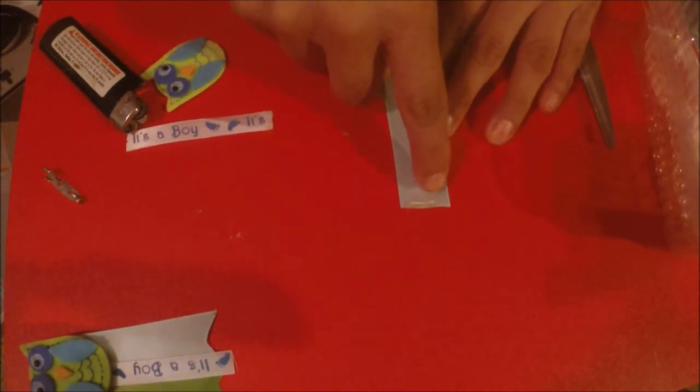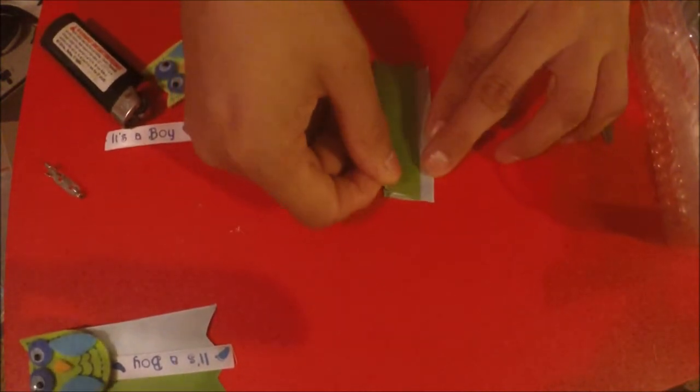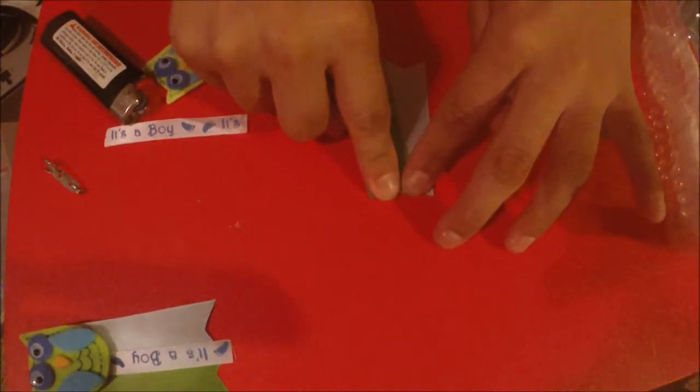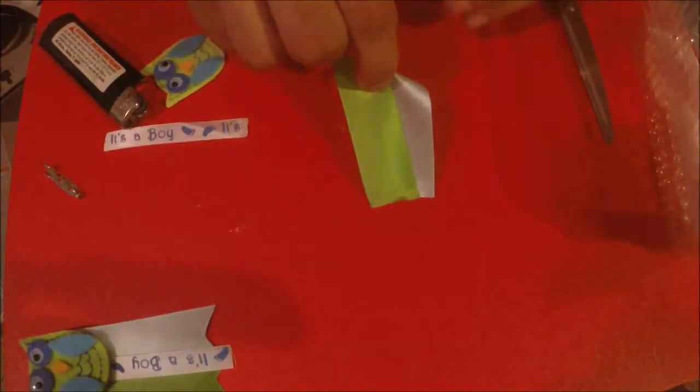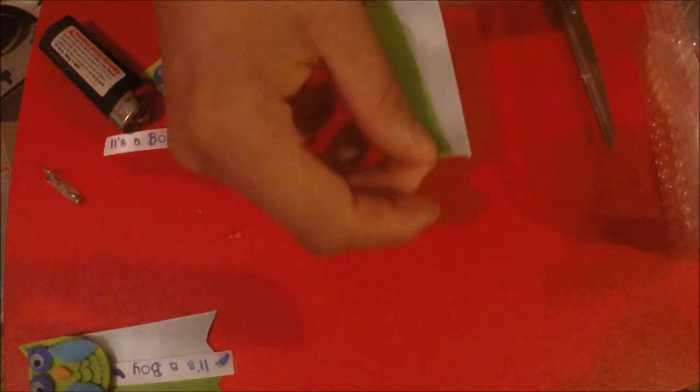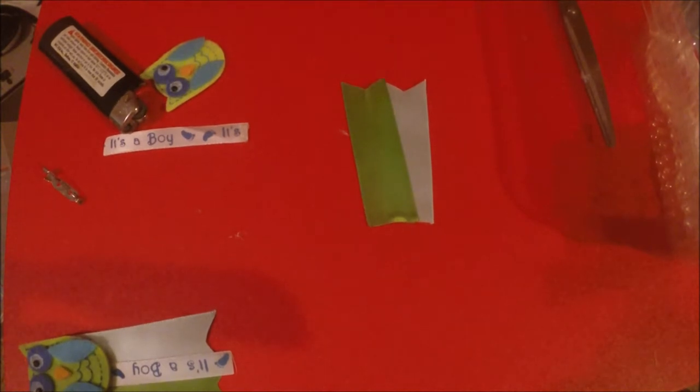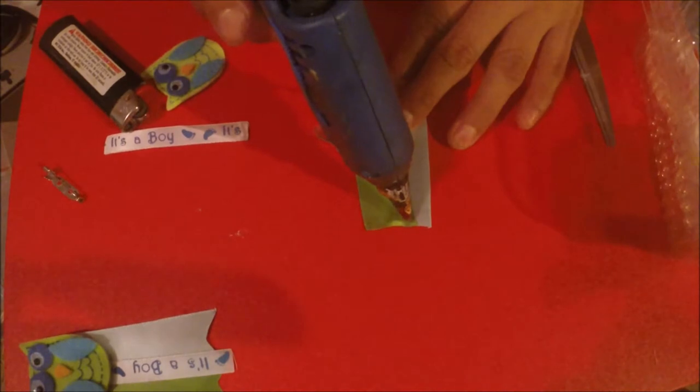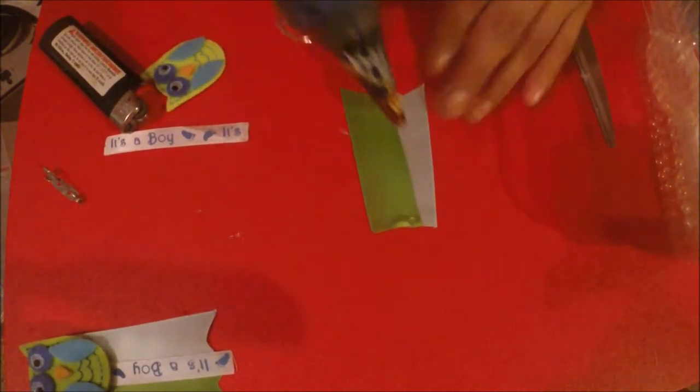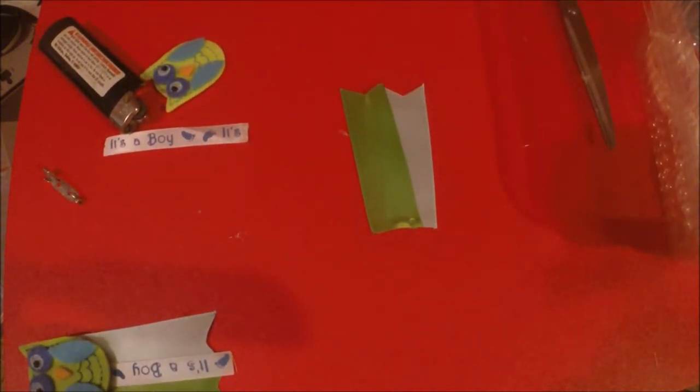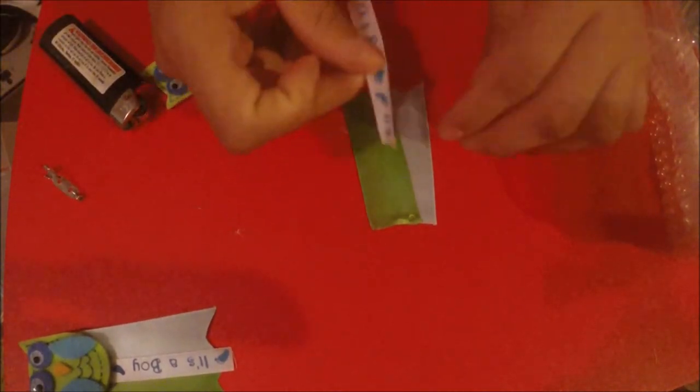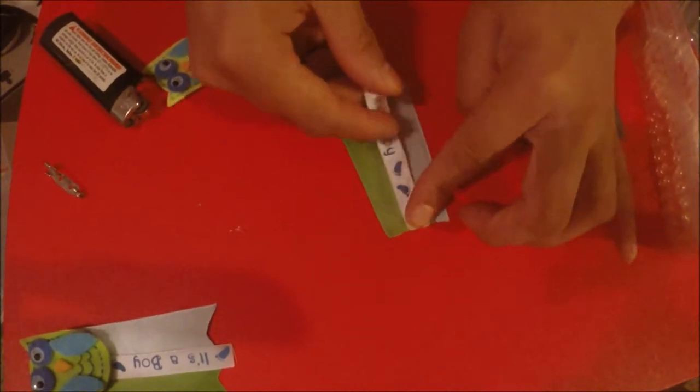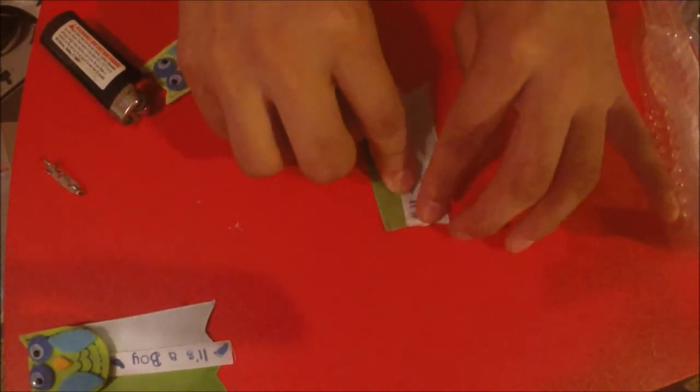Put glue from here to here and then we paste the green on top. Or it could be the opposite, the blue on top and the green on the bottom, but it's your choice. Then we put a dot of glue right here in the center and we paste the it's a boy ribbon right there like that.